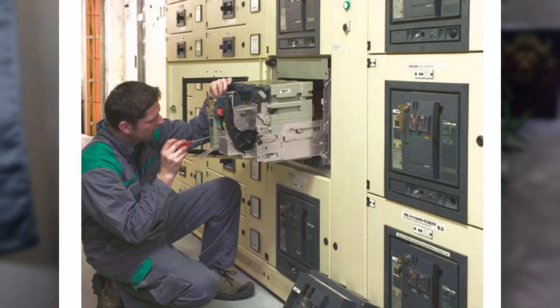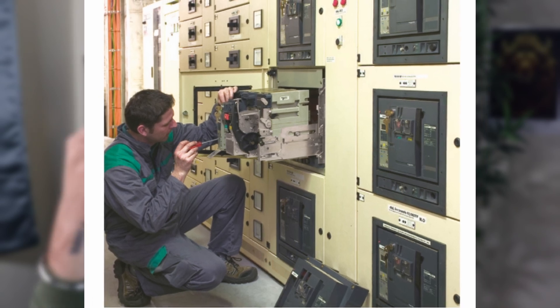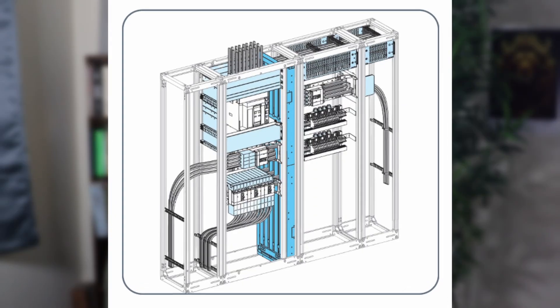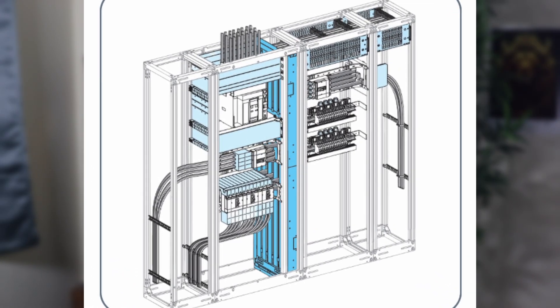Imagine an engineer working on low voltage switchgear maintenance who accidentally touches a live part. In such a scenario we can experience the worst condition — maybe the loss of life. This can be prevented with the help of internal separation forms, which are one of the crucial components of low voltage switchgear. In this video we are going to understand what internal separation forms are and what different types of forms are defined by the IEC standard.